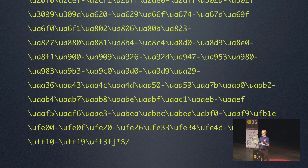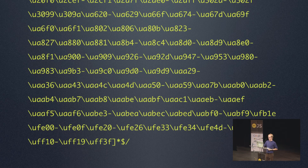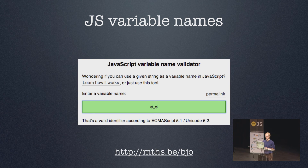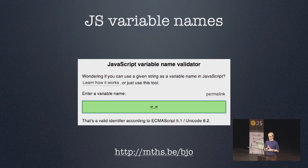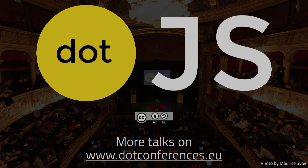I didn't write this out by hand — I wrote a Python script that generated this for me because it would be way too much work otherwise. And I've also made an online tool for that, so you can simply enter any string and it will immediately tell you if it's a valid JavaScript variable name or not. Anyway, that's it for me — thank you for your attention.